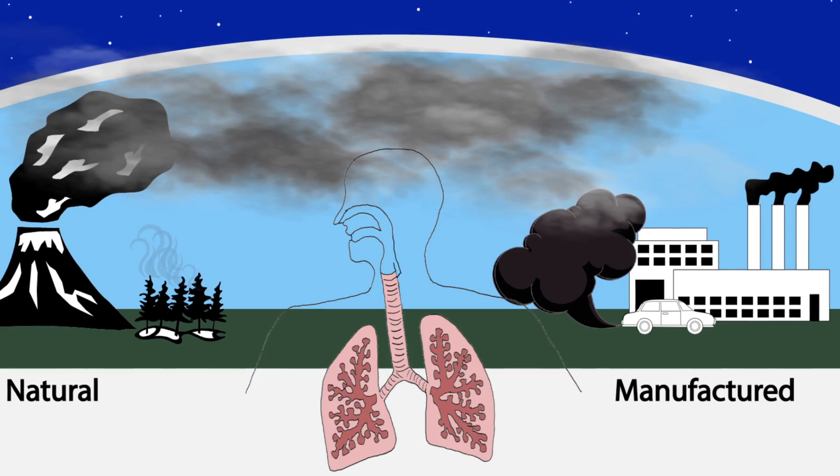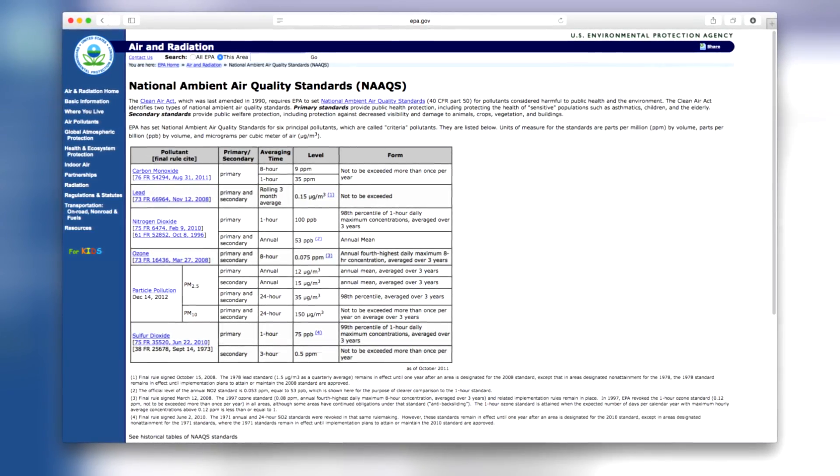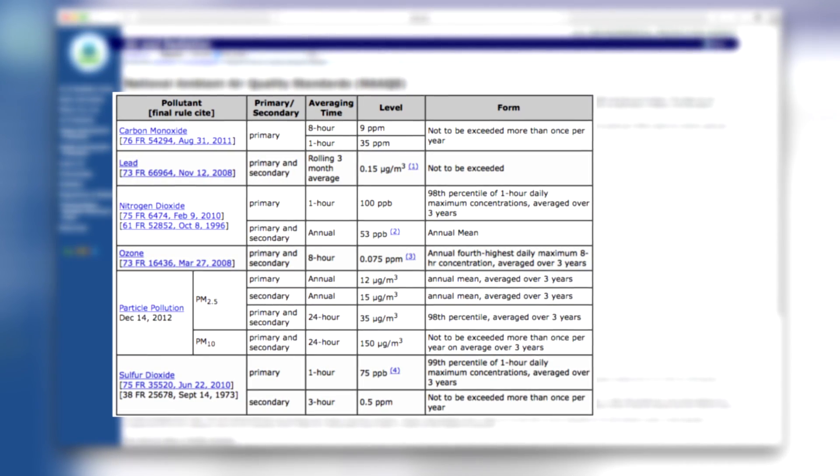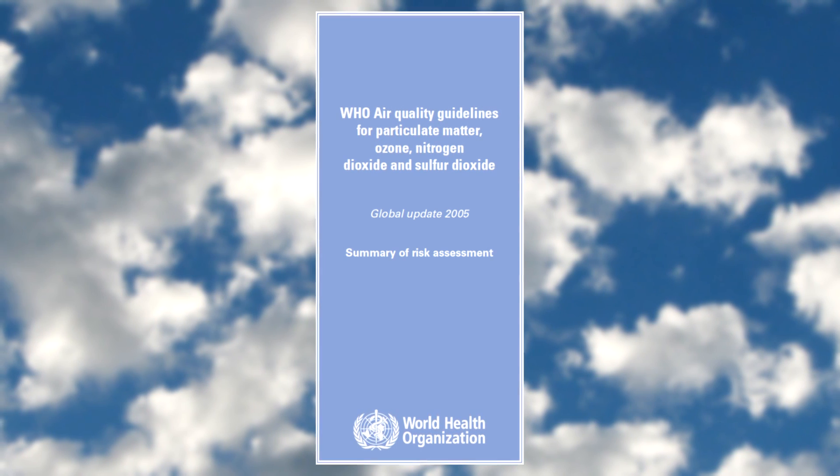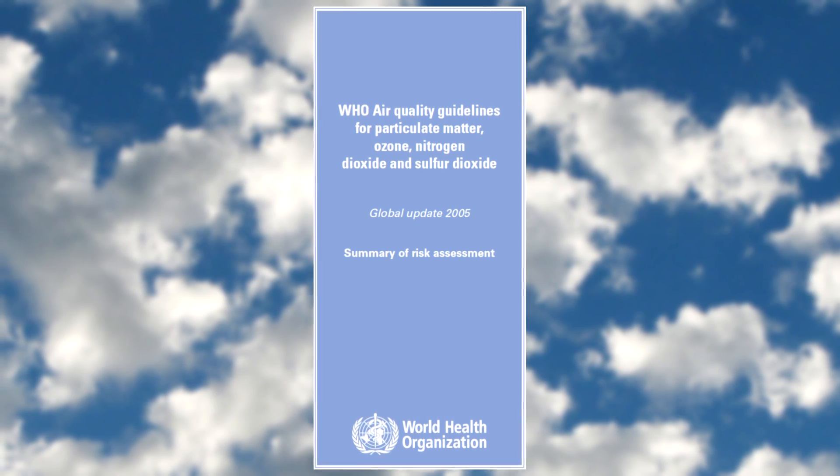These sources of data are the primary source of information used by government regulators to determine maximum permissible exposures in the U.S., and by European agencies and the World Health Organization. It appears that several things could happen: these maximum permissible exposures could be reconsidered based on this new data, or when the new review of exposure standards comes up, these data will certainly be part of the equation in coming up with the new standards.